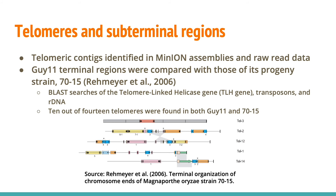Previous Southern blots comparing telomeres of GI-11 and 70-15 showed that the strains have three unique telomeres. More research can be done to investigate whether the 14th telomere is also common between GI-11 and 70-15 or if it's another divergence. This is another great example of how computer science can provide biological insight.